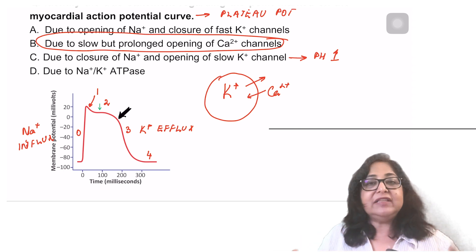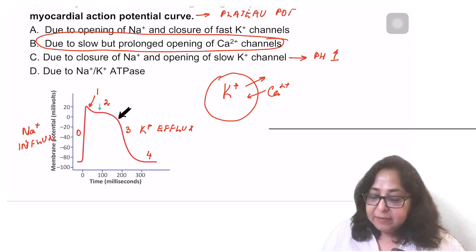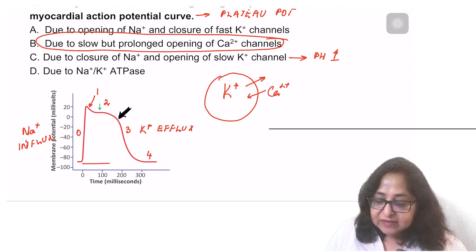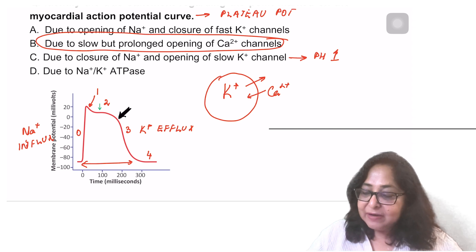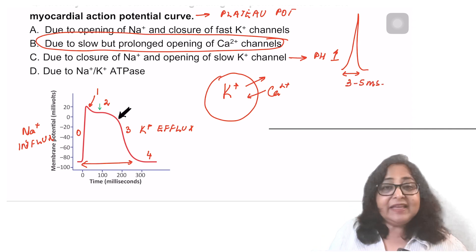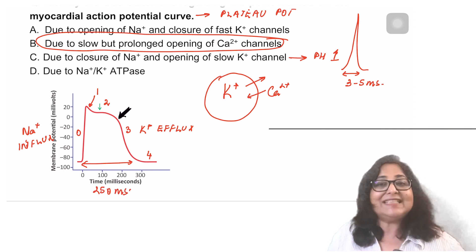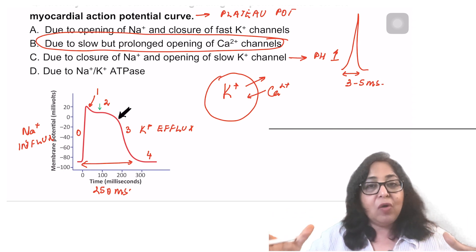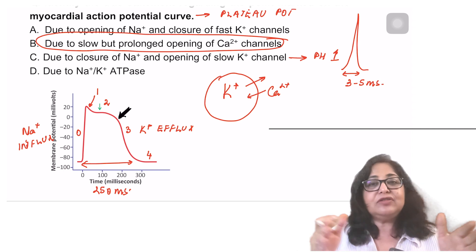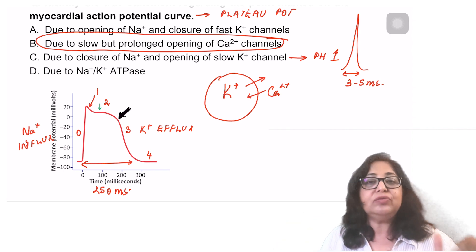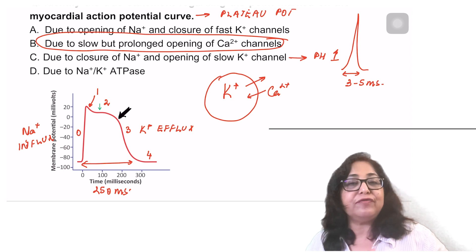What is the advantage of the plateau? Because of the plateau phase, the total duration of the action potential has increased. Let's compare it with a skeletal muscle. In the skeletal muscle, the duration of action potential is 3 to 5 milliseconds. But in the case of the cardiac muscle, it has increased to 250 milliseconds. It has got prolonged and this is because of the presence of the plateau phase. So not only has the duration of action potential increased, but also the duration of the absolute refractory period.